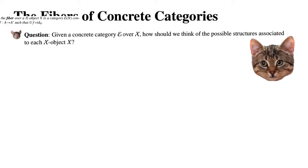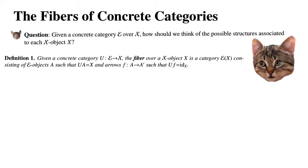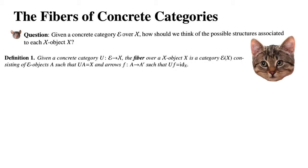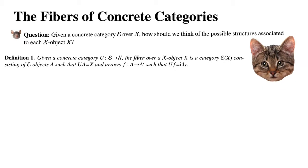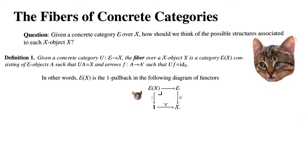We start with the definition. Given a concrete category U: E → X, the fiber over an X-object X is a category, denoted E_X, consisting of E-objects A such that UA = X, and the arrows between these objects are arrows F: A → A' in E such that UF equals the identity on X. In other words, the fiber over X is a 1-pullback in the following diagram of functors.